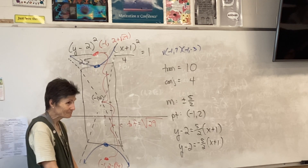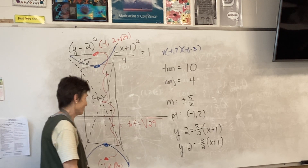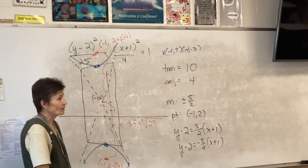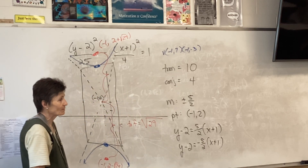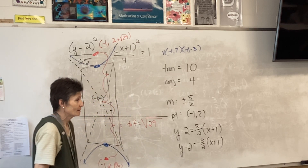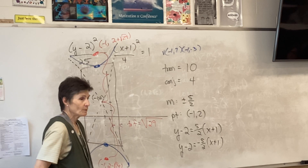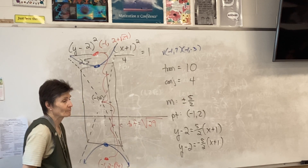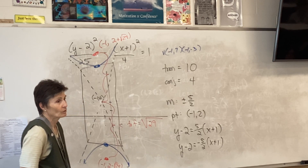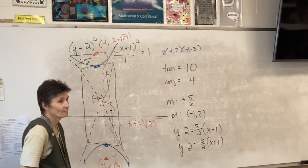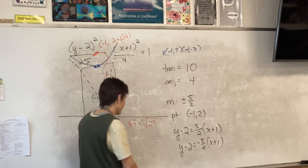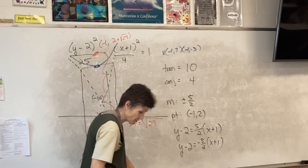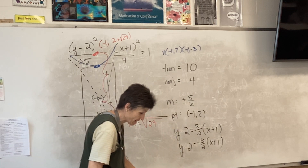So the equations are: y minus two equals five halves times x plus one, and y minus two equals negative five halves times x plus one. Any questions about that before I erase it? Alright, let's look at the last problem on this page — letter H.